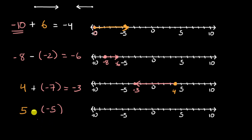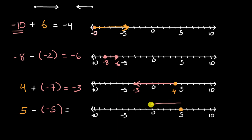Now this last one — try to do it on your own before we do it together. Some of you might be tempted to say five and negative five, aren't those additive inverses? Don't those just cancel out? Well, they would if you were adding. Five plus negative five is equal to zero. But here we're doing five minus negative five, so let's do it step by step. We're starting at five. Now if we were adding negative five to that, we would go five units to the left and end up at zero. But we are not adding negative five — we are subtracting negative five. So instead of going five units to the left, we're going to go five units to the right: one, two, three, four, five. We end up right over there, at 10. And we are done.